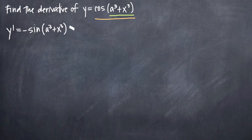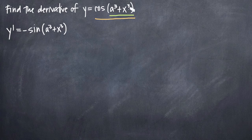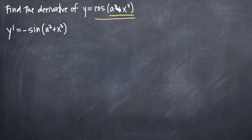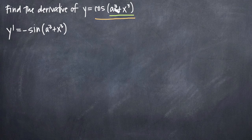Chain rule now tells us we have to multiply our result by the derivative of the inside function, which is a cubed plus x cubed. Pretend the cosine isn't there because we're only looking at the inside. The derivative of a cubed plus x cubed: well, a cubed — remember — is a constant. We said we could plug in a real number for a, like 2, giving us 2 cubed which is 8. The derivative of any constant is 0, so the derivative of a cubed is 0.